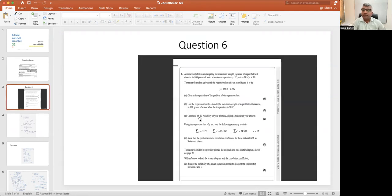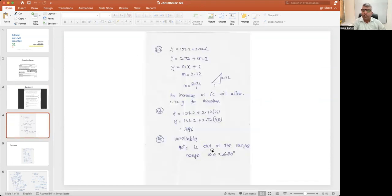Question 6C: Comment on reliability of your estimate, giving a reason for your answer. They have given range x equals greater than 10 and less than 80. But it is 90 degrees, so it is out of the range, so it is unreliable. 90 degrees is out of the range.